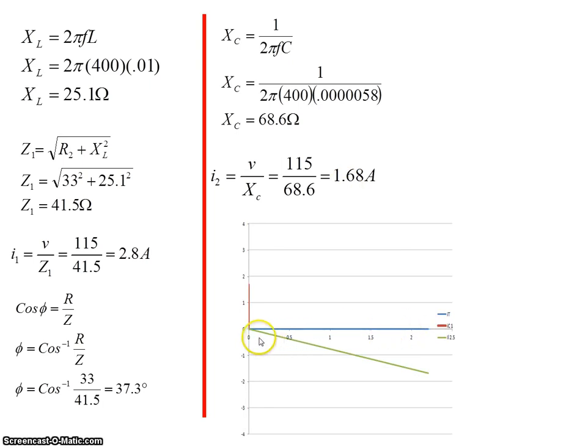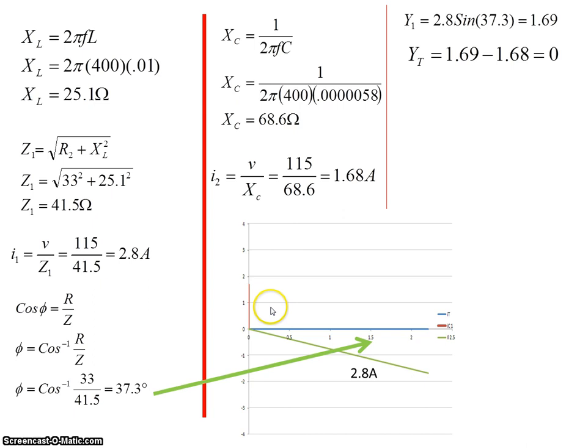Drawing that on a phasor diagram. There's my 2.8 amps from the inductive circuit here. Here's my 1.68 amps from the capacitive circuit. I know this value is 2.8. I know this value here is 37.3. So if I want to get what I'm calling YL here, it's 2.8 times the sine of 37.3, which is 1.69. So I have 1.69 here and I have effectively 1.69 there. 1.69 minus 1.69 is equal to zero.